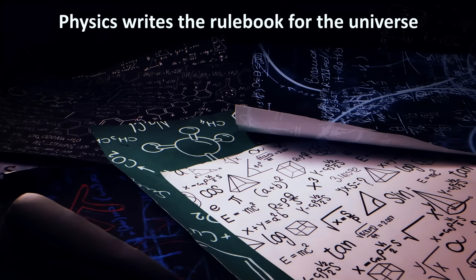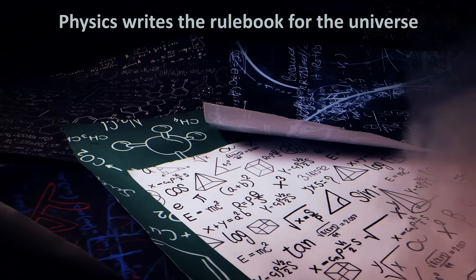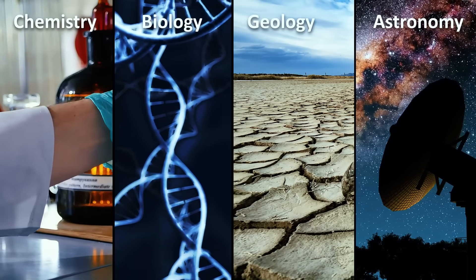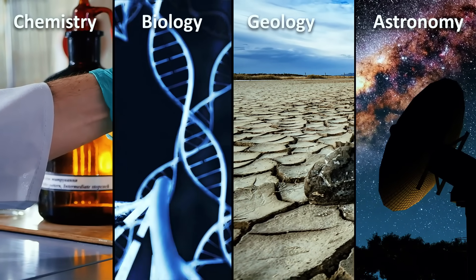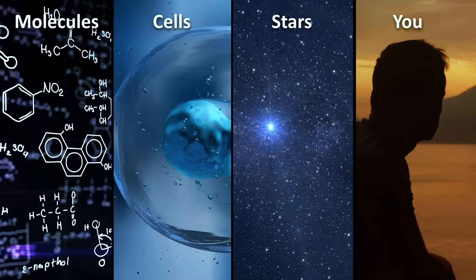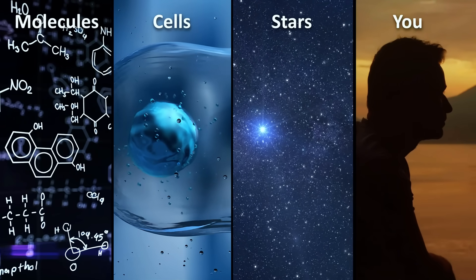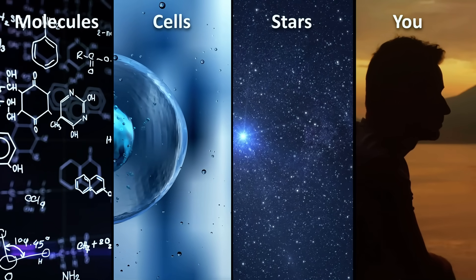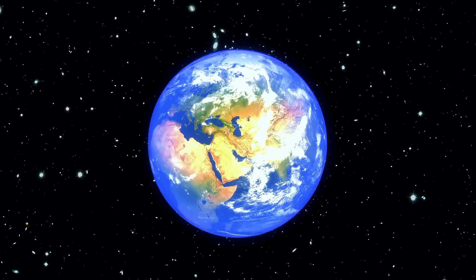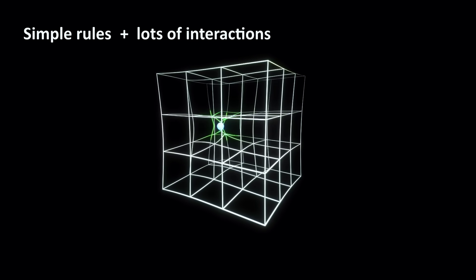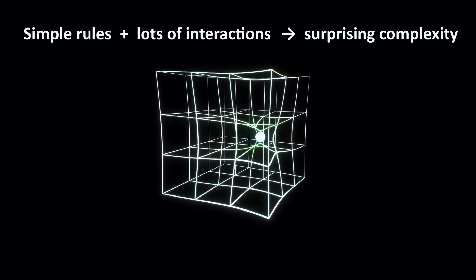Physics is the science that writes the rulebook for the universe. Chemistry, biology, geology, and astronomy then use those rules to explain more complex patterns like molecules, cells, mountains, stars, and you. By understanding the rulebook, you will know how all the other games are played. We are going to start at the smallest scales and zoom out, keeping one key idea in mind: simple rules plus lots of interactions lead to surprising complexity.